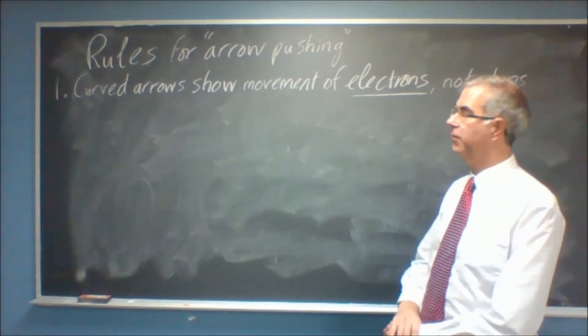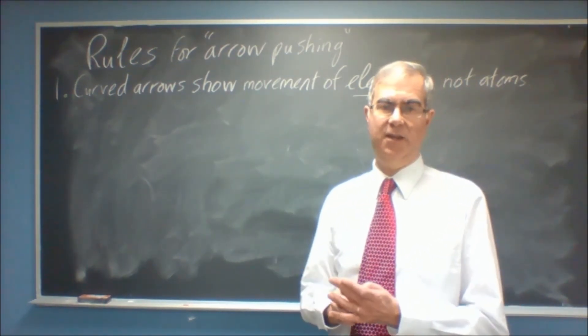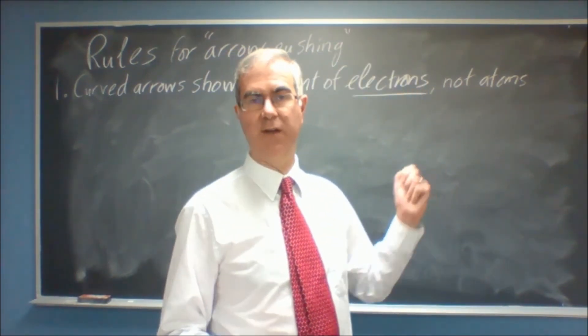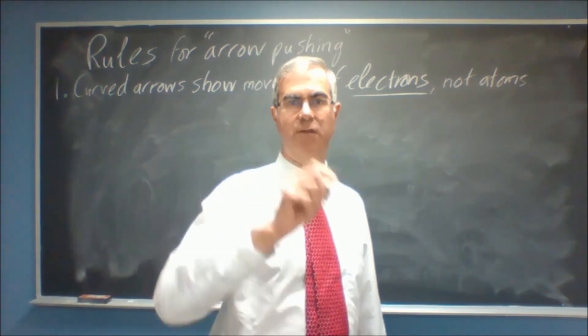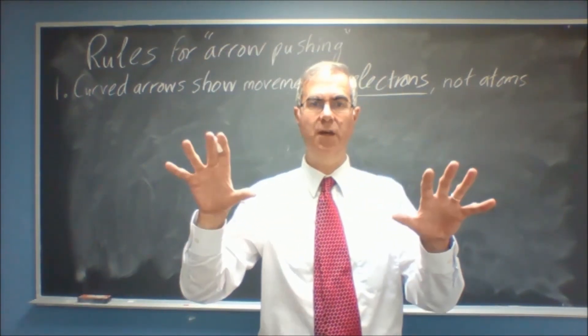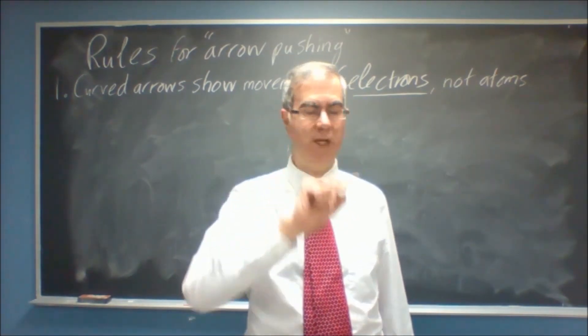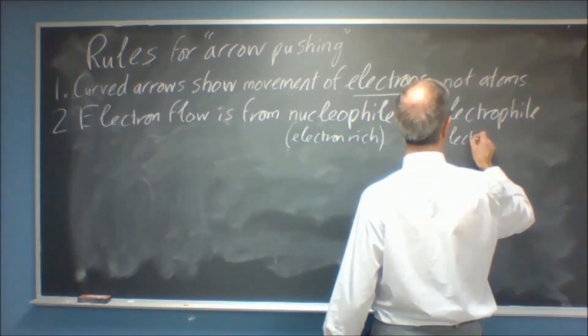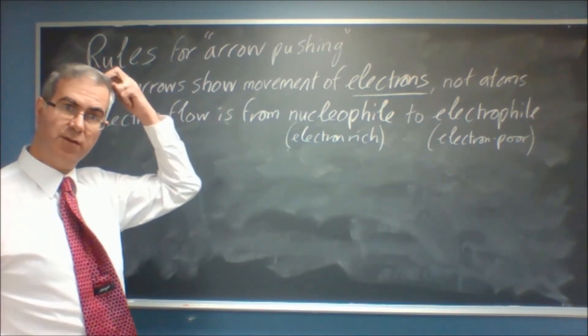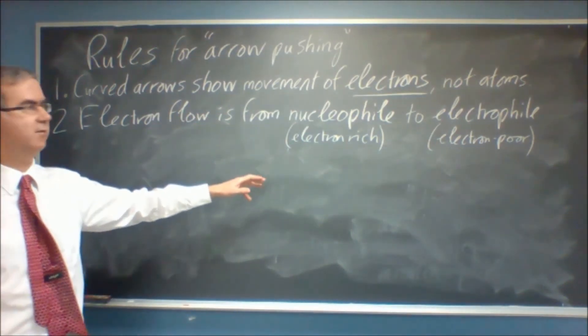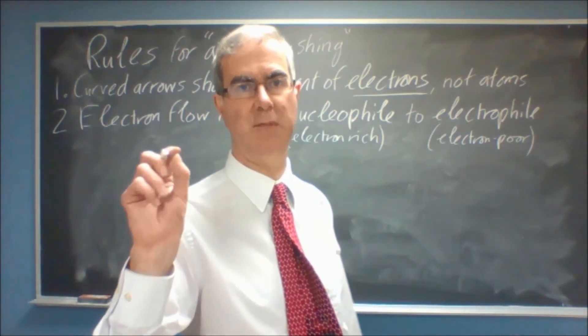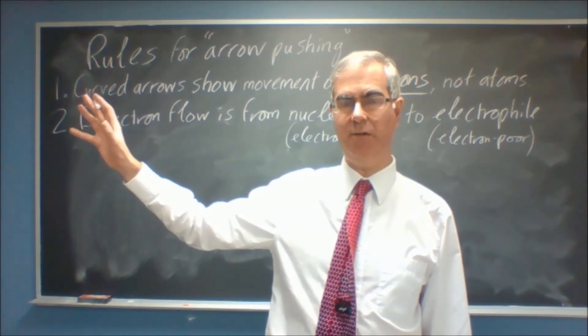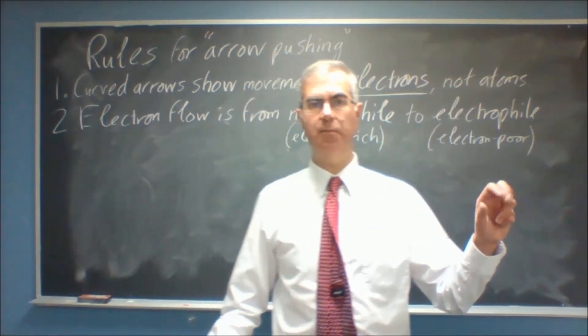So, there are various rules for how you should do this, and I'll cover those next. Okay, the most basic of these rules for arrow pushing is just that these curved arrows mean movement of electrons, not atoms. I know I've more or less defined it as this, and yet very often students will show arrows to mean atoms jumping around. Try and leave the atoms where they are and move the electrons between them to show the change in the connections. So, it makes sense that electrons are going to flow from electron-rich centers towards electrophilic centers.